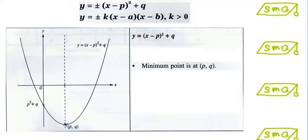The minimum point for this type of equation is always at (p, q), which is shown here. To find the y-intercept, we let x equal to 0. In this case, for this equation, when we let x equal to 0, we will get y equal to p squared plus q. This would be my y-intercept.